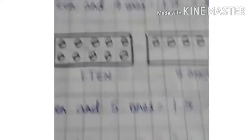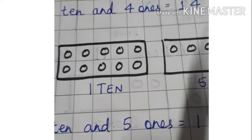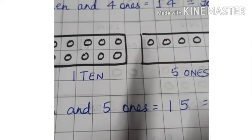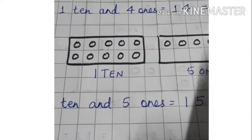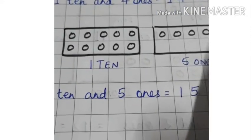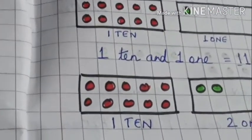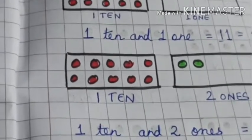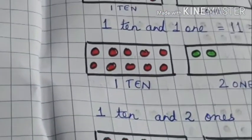Now children, we can make up to nineteen in the same manner. So I have already drawn it in my copy. You have to draw it in your copy. I will just show you right now. So children, I have made one ten and ten dice boxes up to twenty. You can see how I made it. You can follow it in your copy.